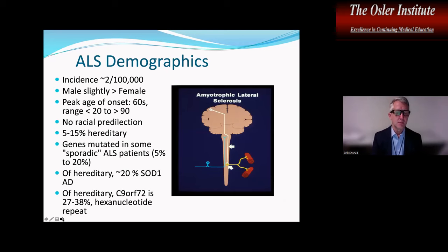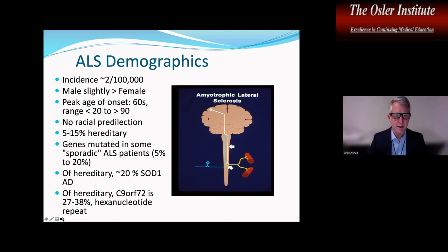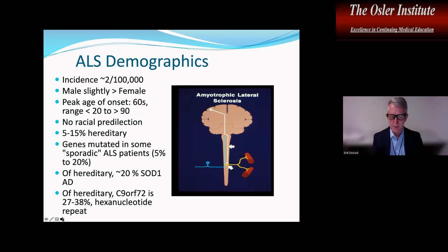The incidence of ALS is about two per 100,000. It's slightly more common in males than females. It has a peak age of onset in the 60s, but can range from under 20 to over 90 years old. There's no racial predilection. A subset of patients have an identifiable hereditary cause. About 20% of hereditary cases are SOD1, which is autosomal dominant, and C9ORF72 accounts for about a quarter to 40% of hereditary patients — that's a hexanucleotide repeat.